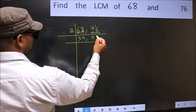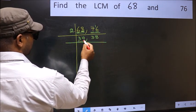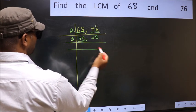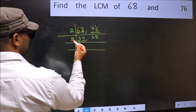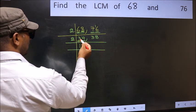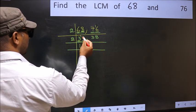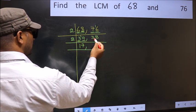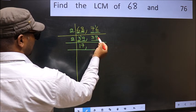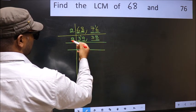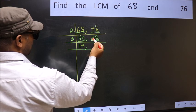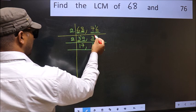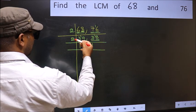Now 34: last digit 4 is even, so divide by 2. First digit 3 — closest in the 2 times table is 2, remainder 1 carried forward, making 14 — 2 sevens are 14. So 34 ÷ 2 = 17. For 38: last digit 8 is even, divisible by 2. First digit 3 — closest in the 2 times table is 2, remainder 1 carried forward, making 18 — 2 nines are 18. So 38 ÷ 2 = 19.